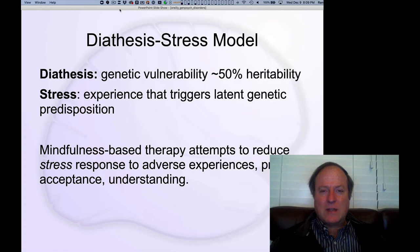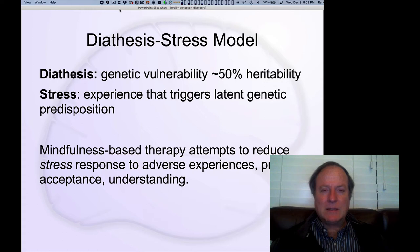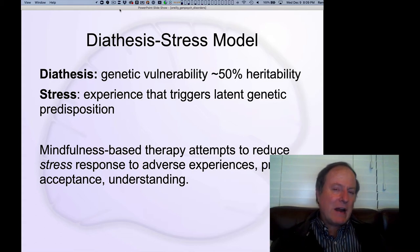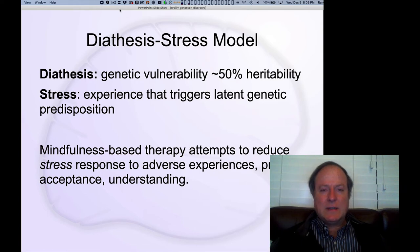A lot of these disorders have this classic, at least according to twin studies, kind of 50% heritability — maybe less according to GWAS studies — a basic propensity or predisposition towards experiencing one of these disorders. And then you have some kind of stressor, some environmental trigger or event that produces the actual full-blown experience of one of these disorders.